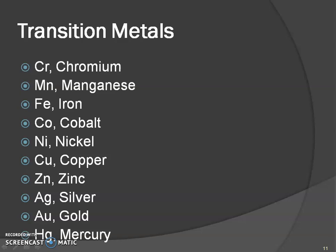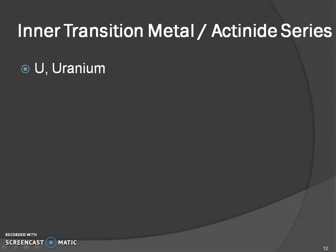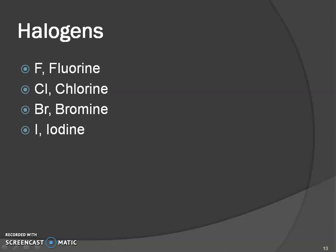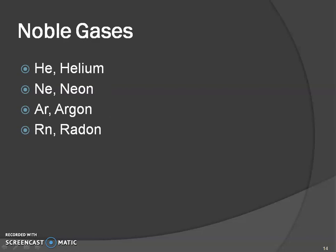The inner transition metals or actinide series: U — Uranium. The halogens: F — and only F, not FL — F for Fluorine, Cl — Chlorine, Br — Bromine, I — Iodine. The noble gases: He — Helium, Ne — Neon, Ar — Argon, Rn — Radon. I also want you to take note that even though I've capitalized all the names, you often see names not capitalized — I'm not going to be worried about that. It's the symbols that are really important.